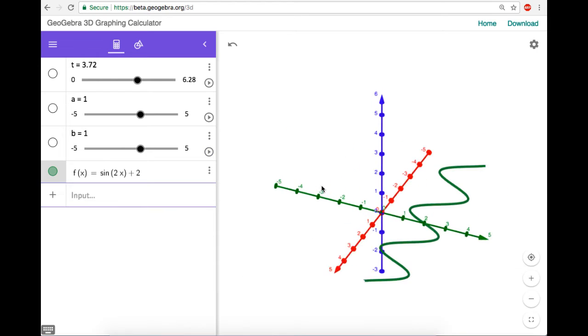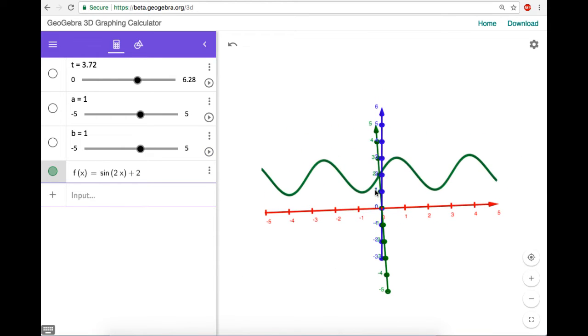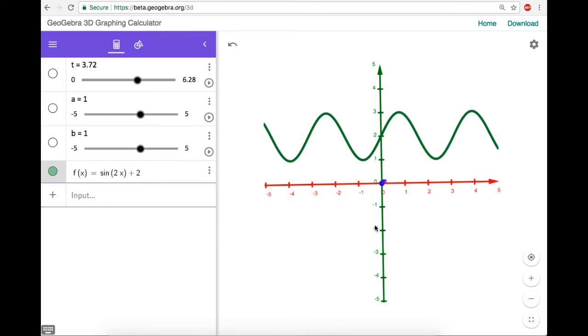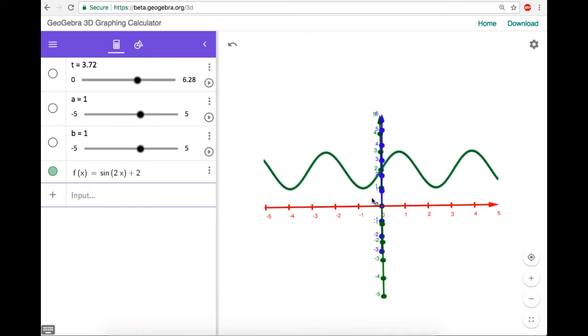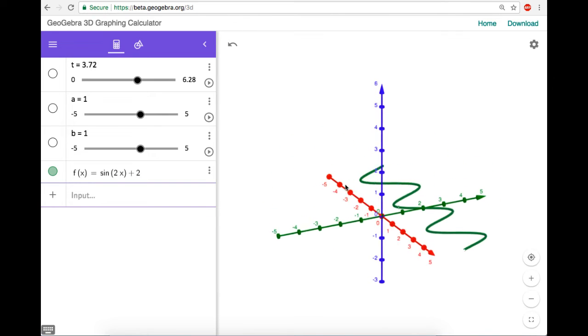just kind of get it off of the x axis, so it looks a little more interesting. Okay, so now I click and drag and orient this, and see this looks just like sine of two x plus two. And we want to rotate this around the x axis.